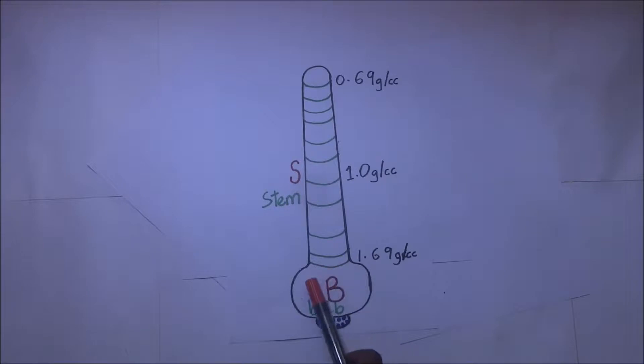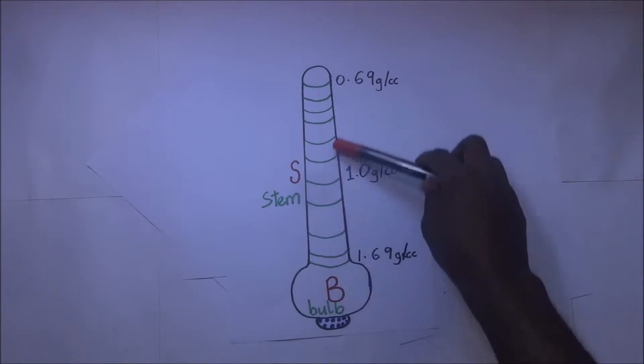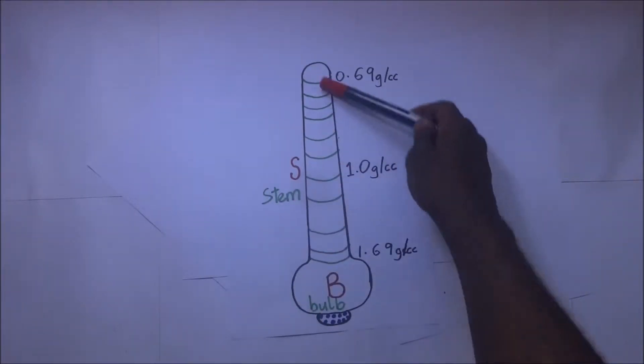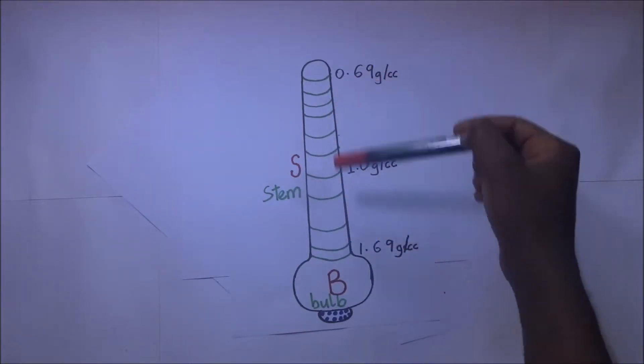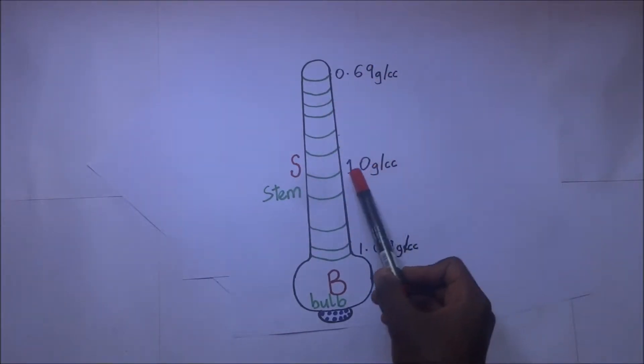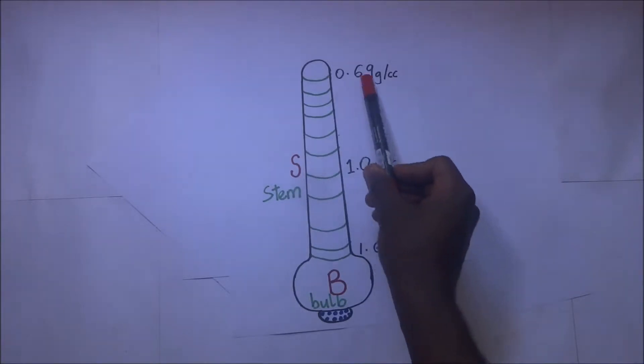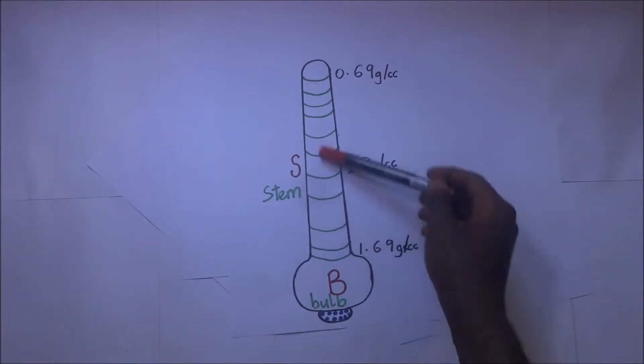This large glass bulb B is known as the floating bulb, and on top of it is what we call the graduated stem, or just the stem S. This stem is graduated with markings: 1.0 grams per cc, 0.69, and 1.69. This is the graduated stem.